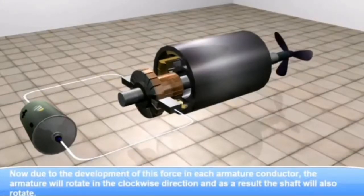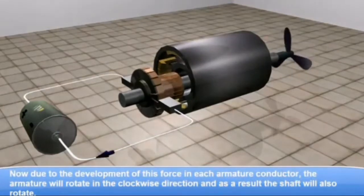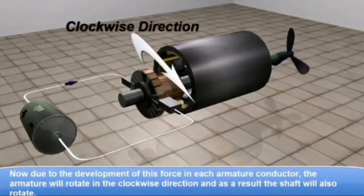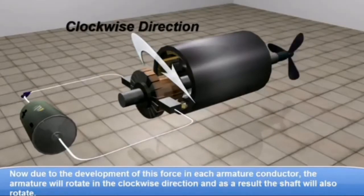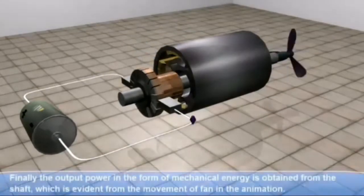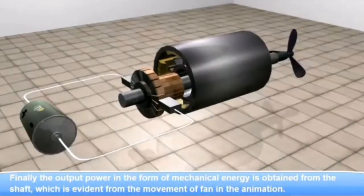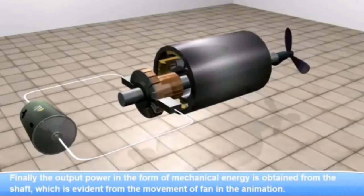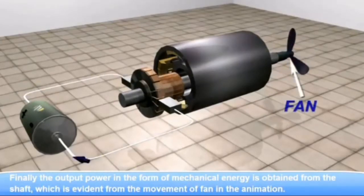Due to the development of this force in each armature conductor, the armature will rotate in the clockwise direction. And as a result, it is the output of the motor. Finally, when the mechanical energy is obtained, which is evident from the movement of fans and wheel motion.